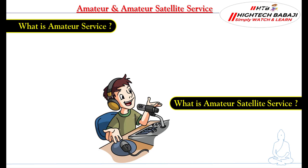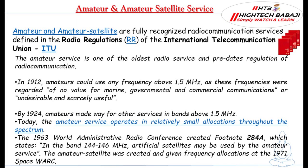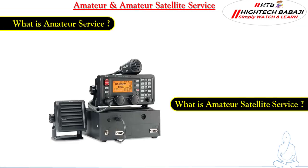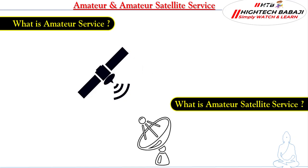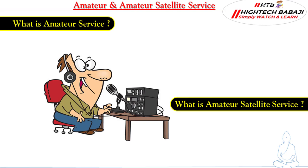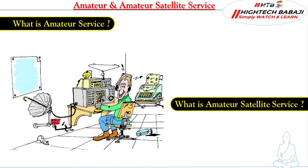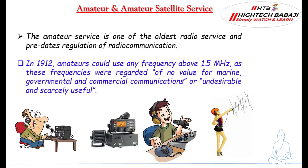Amateur and Amateur Satellite Services are fully recognized radio communication services defined in the ITU radio regulations. The Amateur service is one of the oldest radio services and pre-dates the regulation of radio communication — meaning this service existed before radio regulation was formed. In 1912, amateurs could use any frequency above 1.5 MHz, as those frequencies were of no use for maritime services, governmental communications, or commercial communications.